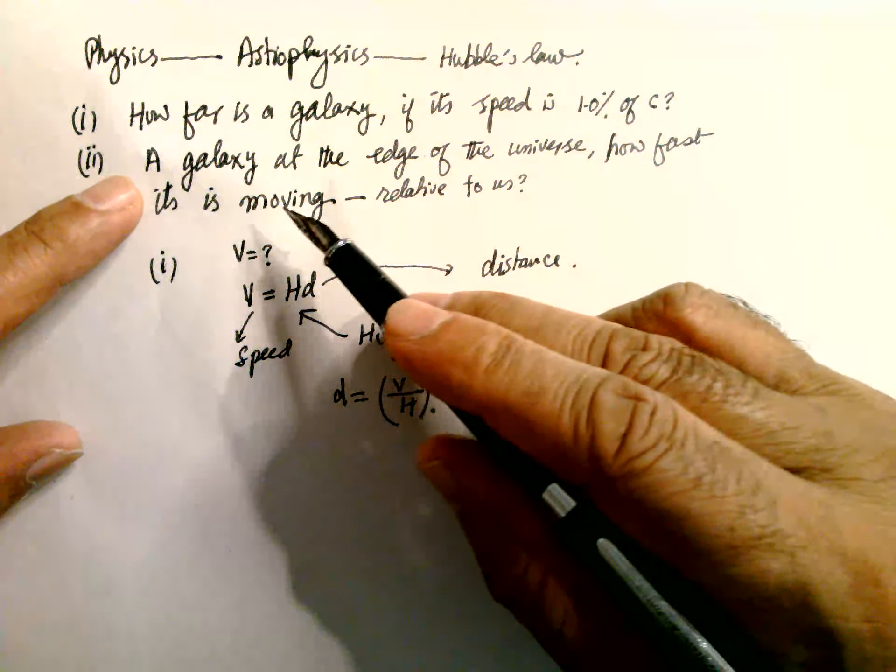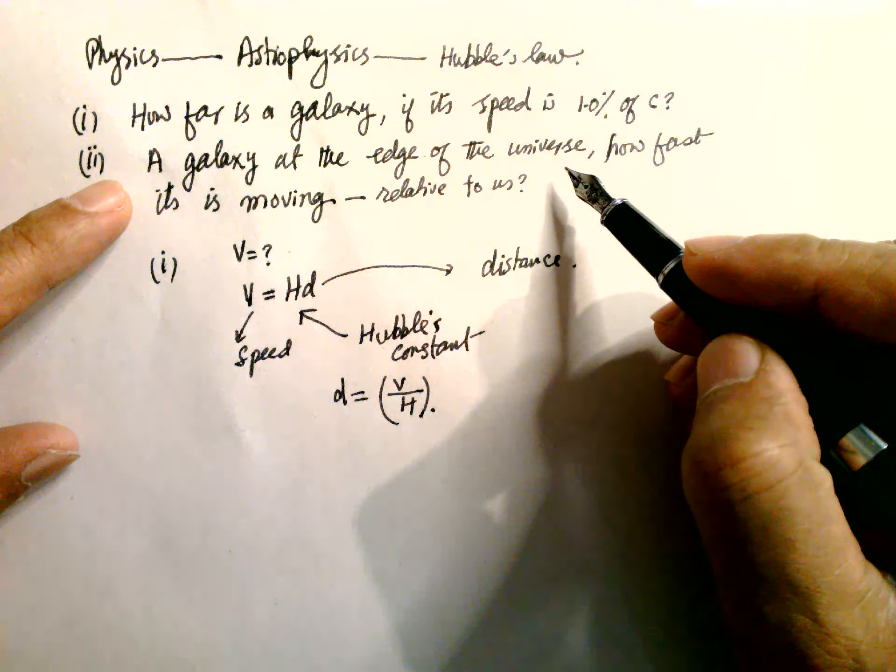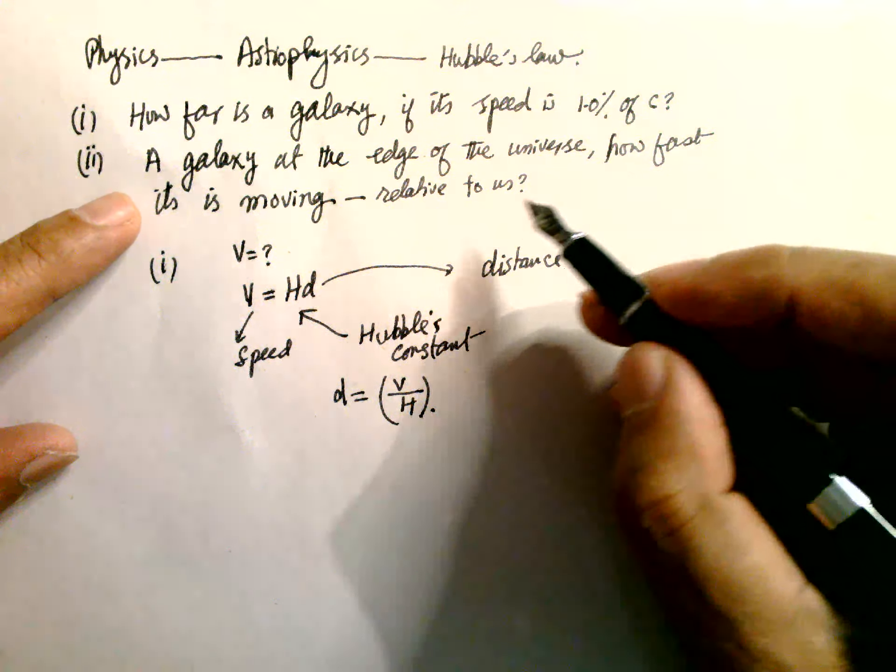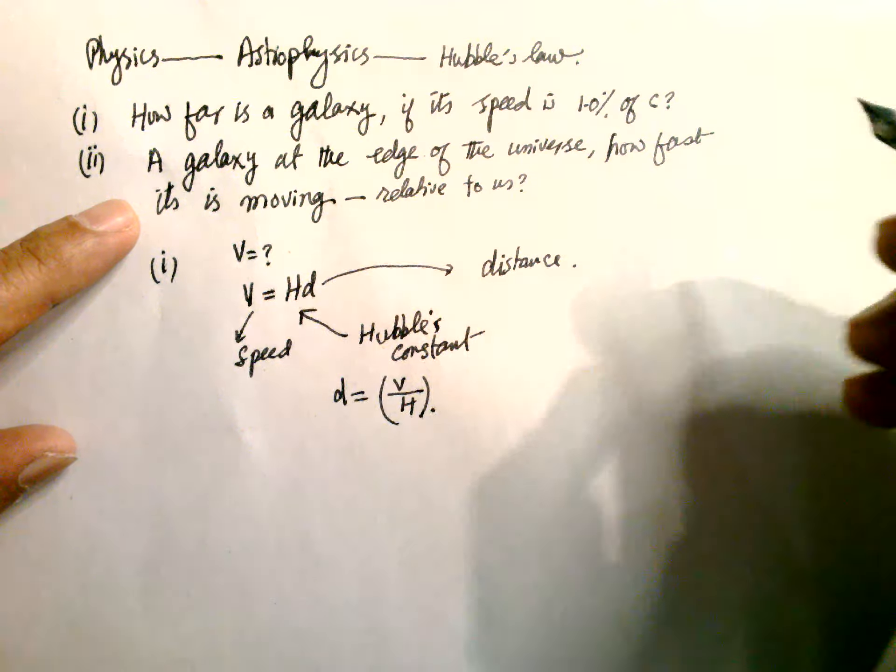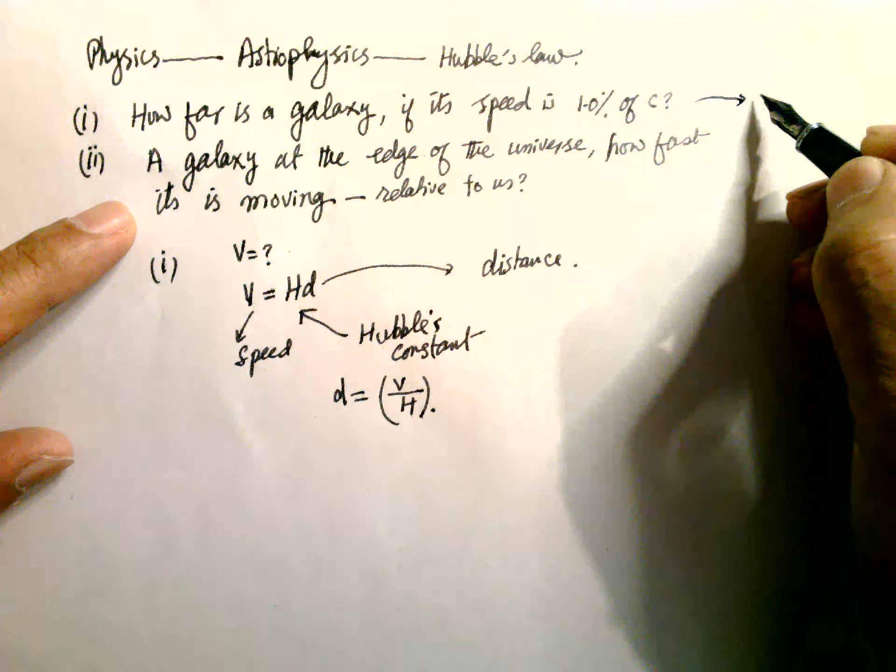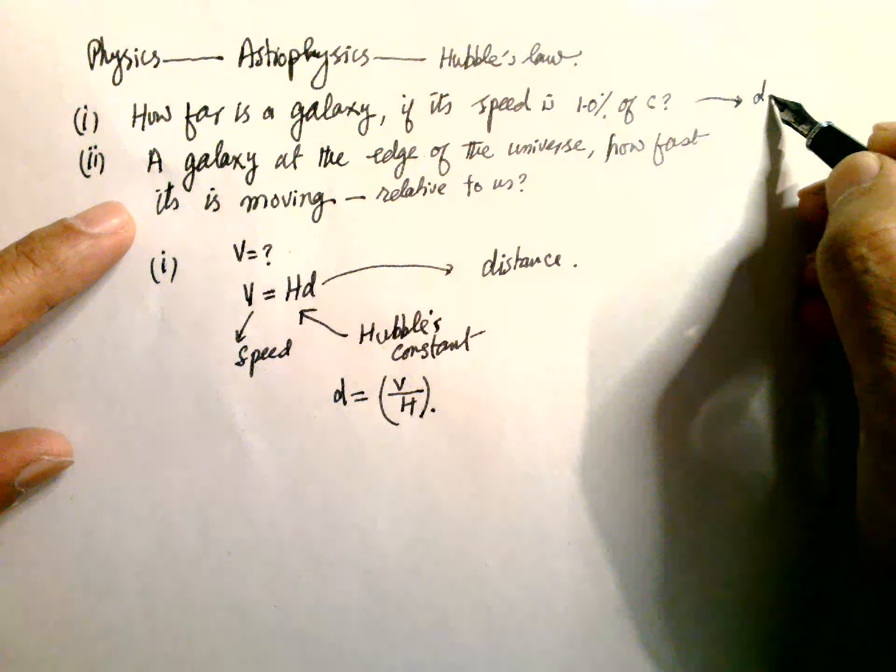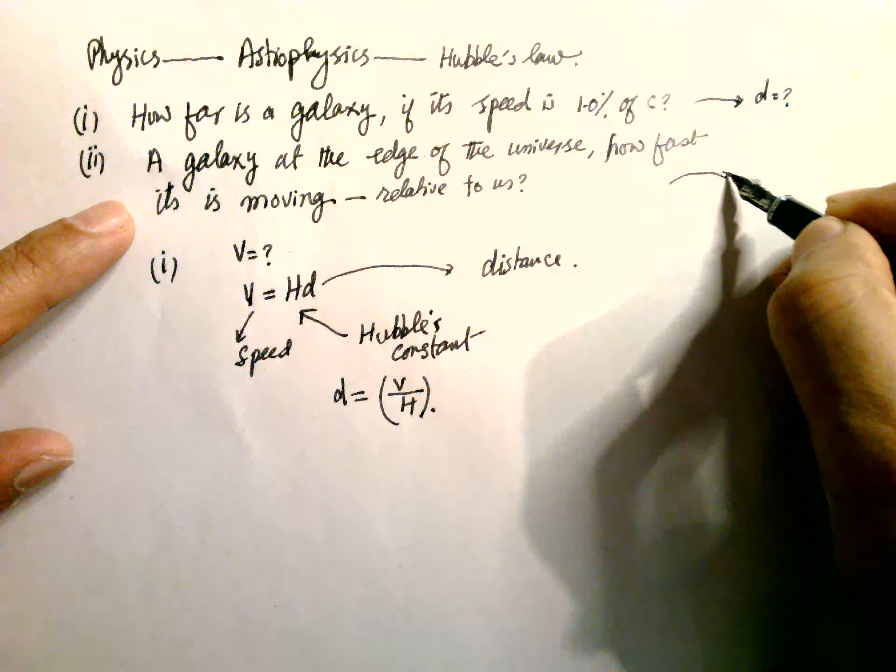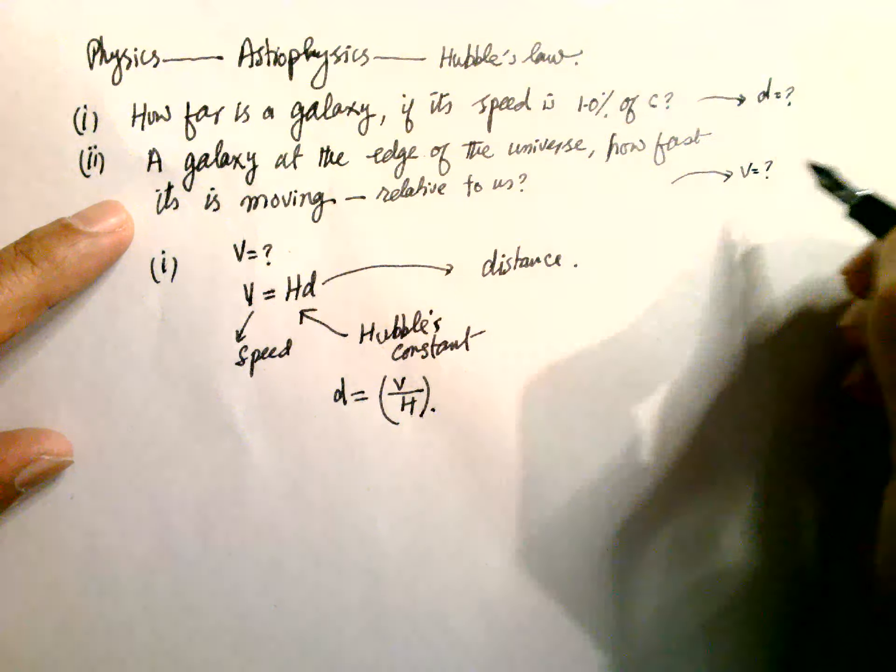Number two: if a galaxy is at the edge of the universe, how fast is it moving relative to us? So for number one, we have to find the distance D, and for number two, we have to find its speed.